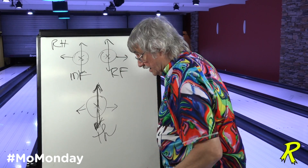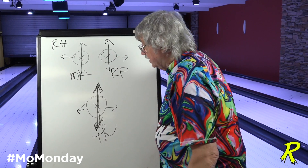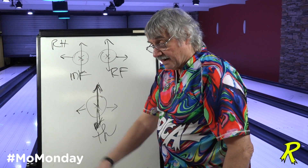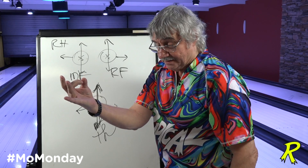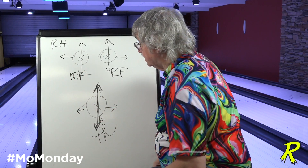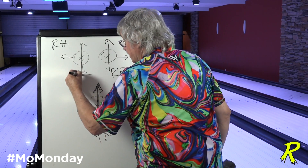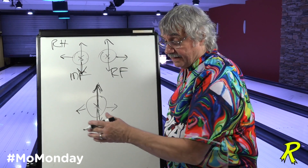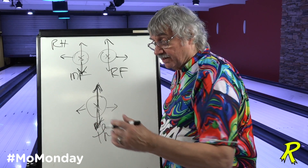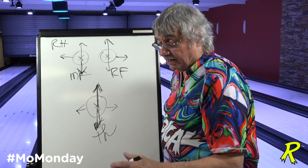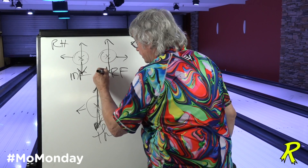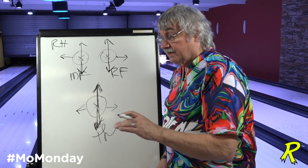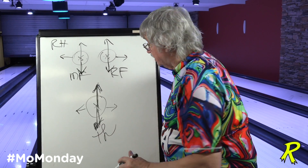Now one thing a lot of people don't pay attention to is that higher track players are ring finger dominant. Lower track players are middle finger dominant — you learn that after doing it for a lot of years. So if I pitch the middle finger forward, I'm going to make the ball react like it was thrown by a lower track player, which means I'm going to increase their axis tilt and rotation. If I pitch the ring finger forward, I'm going to raise their track or decrease their axis tilt and their axis rotation.